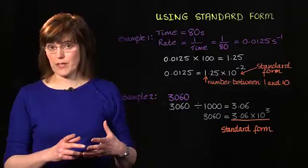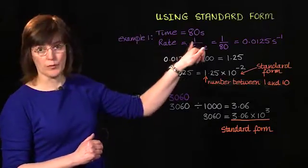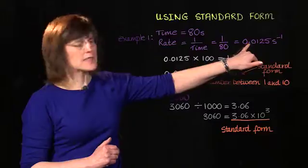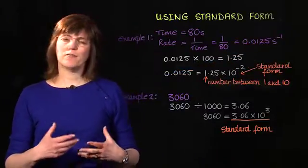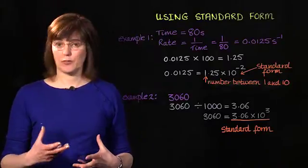If we convert that into rate by dividing it into 1, 1 over 80, we get 0.0125 per second. Now that's a very small number, it would be difficult to plot on a graph.